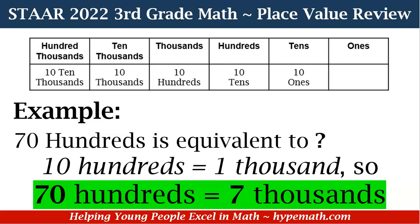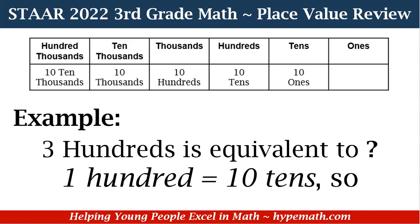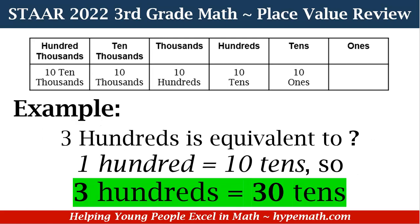Let's do one more example before we dive into our problems. We have: three hundreds is equivalent to what? In order to solve this, we look for hundreds in our place value chart. We can see that 100 is equal to ten tens, so three hundreds is equal to thirty tens.